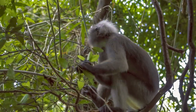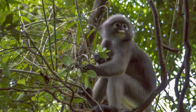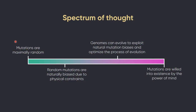One of the things that a lot of people assume when they first learn about evolution is that mutations must be maximally random. You'll hear people say that there's random mutations and then there's natural selection — well, that must mean that mutations are maximally random.